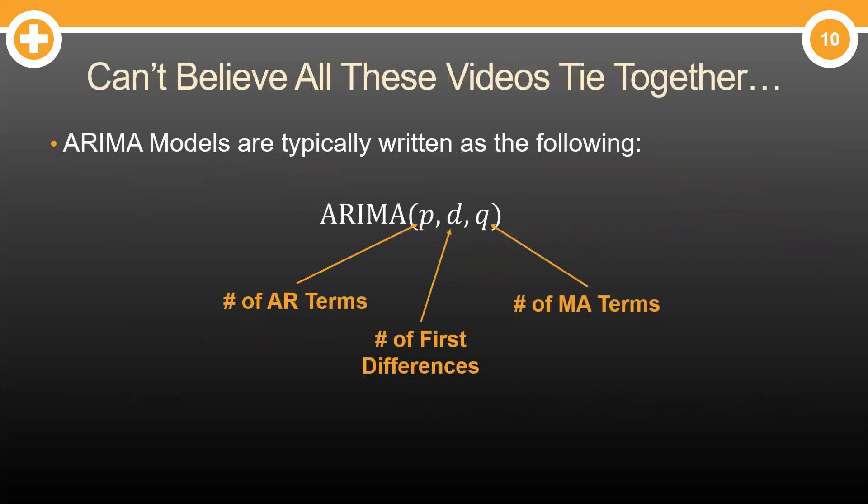This led us to the notion of how ARIMA models are written mathematically. ARIMA models are typically written, as you see here, with three numbers that summarize them. P, the number of AR terms, D, the number of first differences, and Q, the number of MA terms.